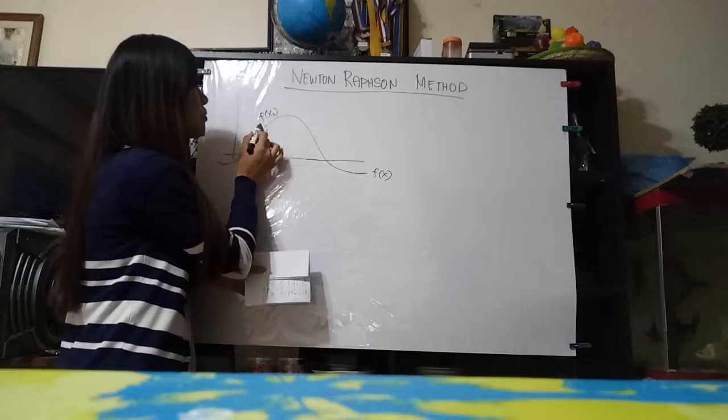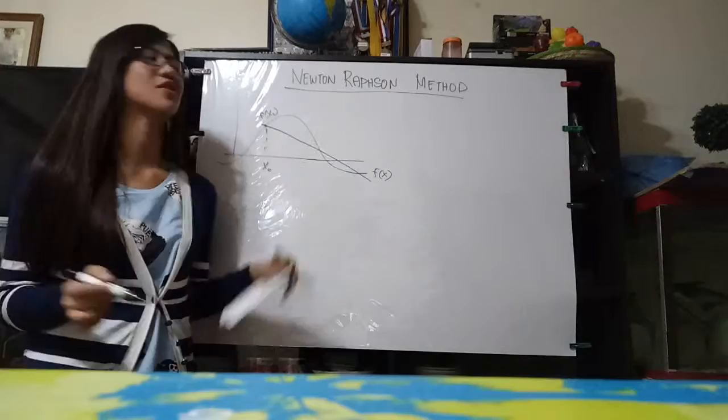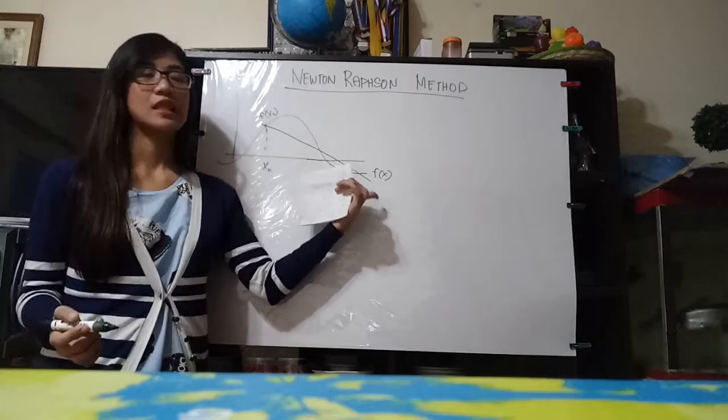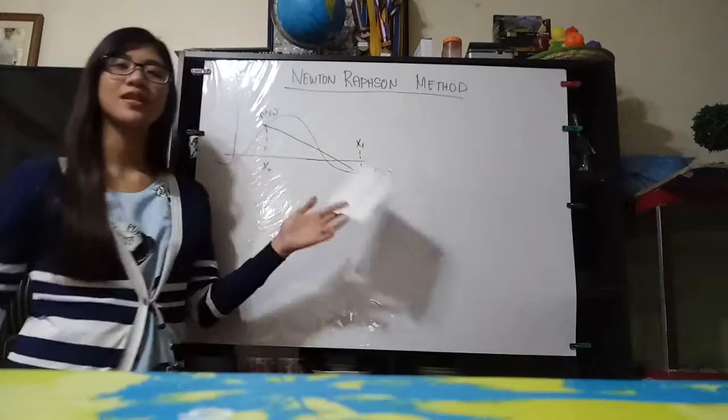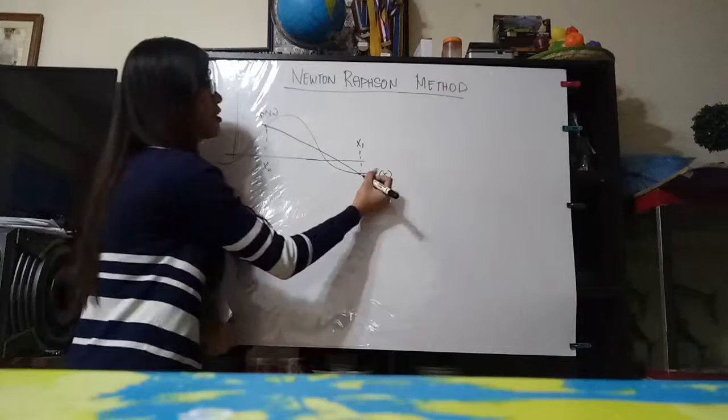If we get its derivative, the line would somehow look like this. That is our derivative for the function of x naught. And then we look where it intersects our function. At this point it intersects our function here, and for this point that would be our x of 1.